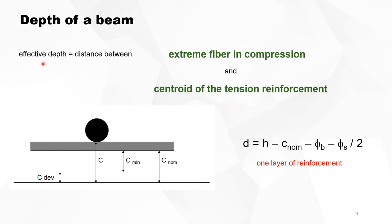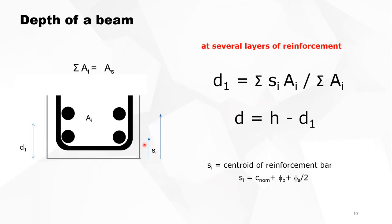The effective depth of a beam is always the distance between the extreme fibre in compression and the centre of gravity of the tension reinforcement. If you have different diameters and different layers, then D1 equals the sum of all areas times their locations divided by the total area, and your effective depth is the total depth minus D1.